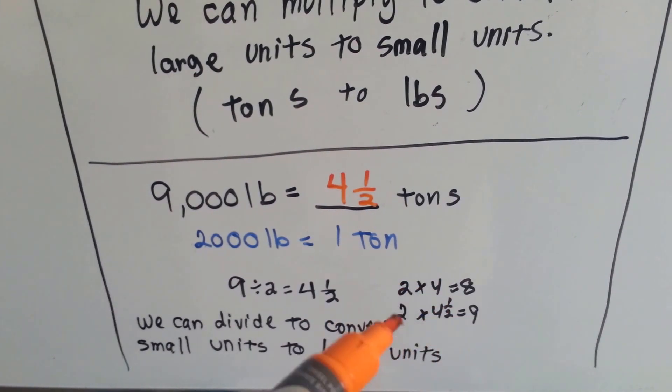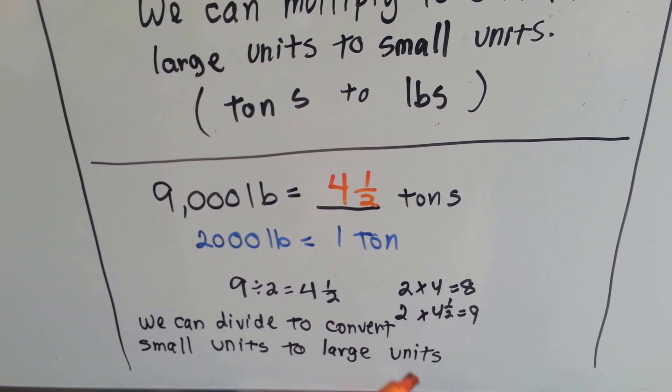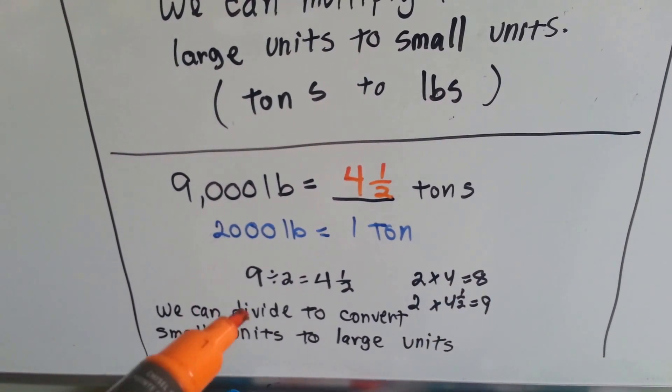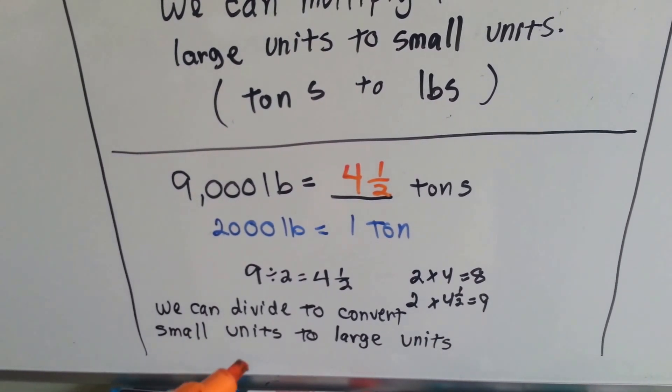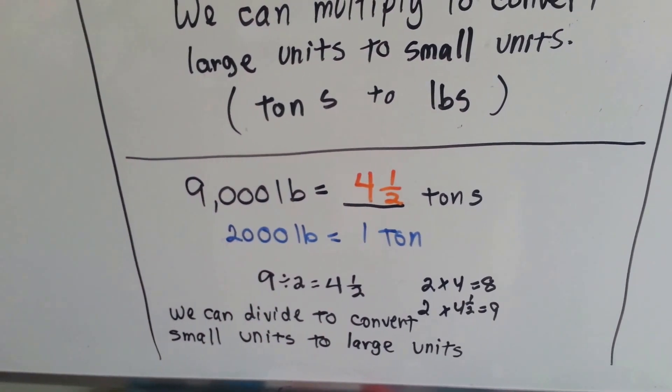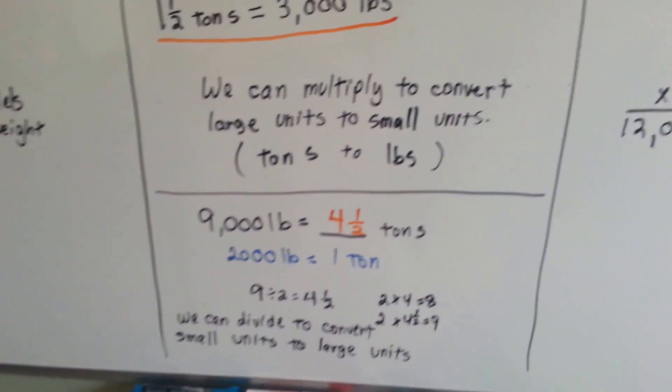See, 2 times 4 is 8, 2 times 4.5 is 9. 2 of the halves makes the extra 1 to make a 9. So we can divide to convert small units to large units, pounds to tons. See? So 9,000 pounds is 4.5 tons.